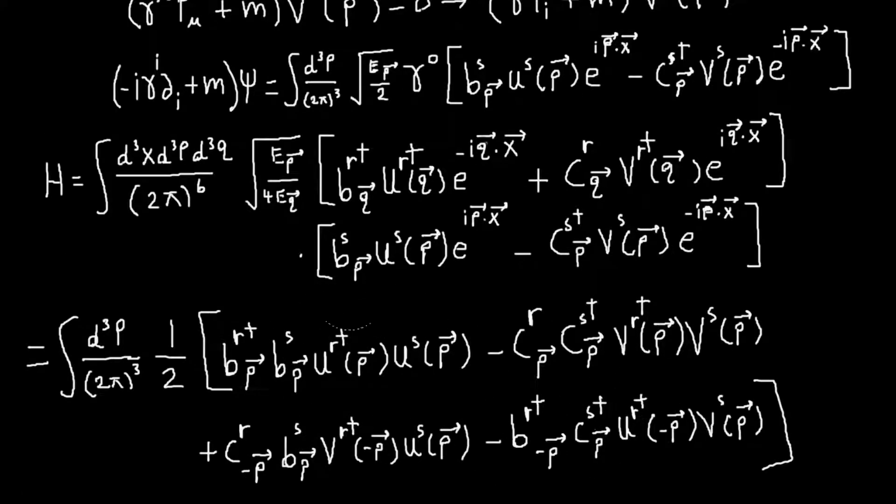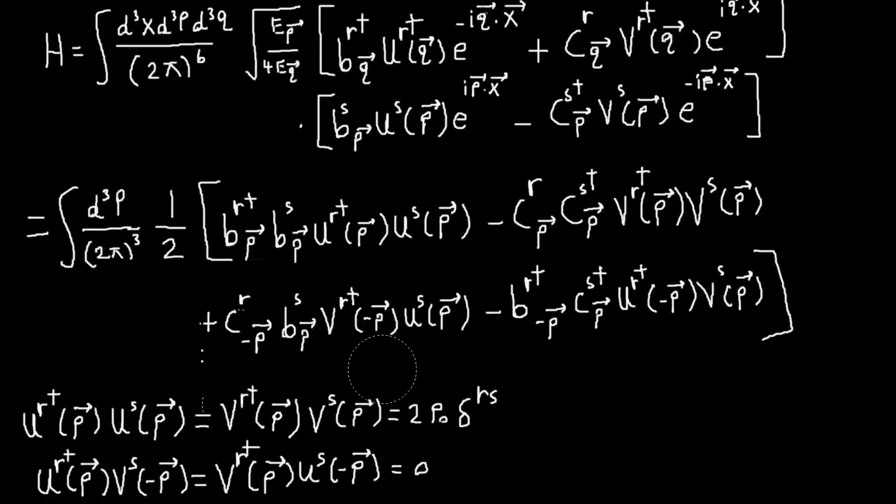And now at this step, we can use our, some of the inner product identities for our basis spinors. So when we have the same spinor, or, well, u_r dagger times u_s, or v_r dagger times v_s, that will be 2p^0 times delta_rs.